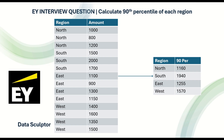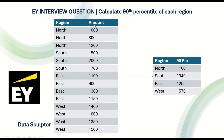Greetings everyone, welcome back to my channel Data Sculptor. Today we are going to see another interesting question in SQL. You have a table called sales with two columns, region and amount. For every region there is an amount, and the question is: you need to find the 90th percentile of each region.